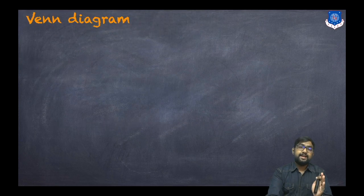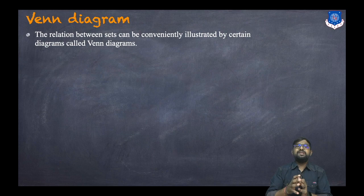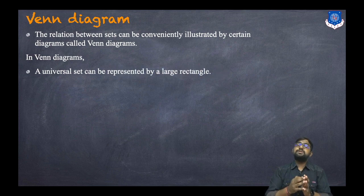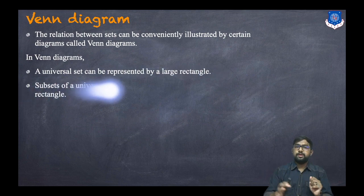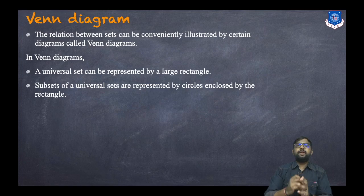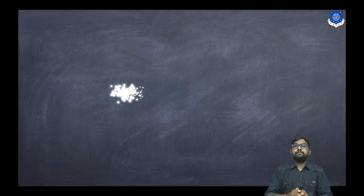Finally, let's discuss the Venn diagram. The relation between sets can be conveniently illustrated by diagrams called Venn diagrams. In a Venn diagram, the universal set is represented by a large rectangle, and subsets are represented by circles enclosed within the rectangle. We will use Venn diagrams to understand set operations in the next session.